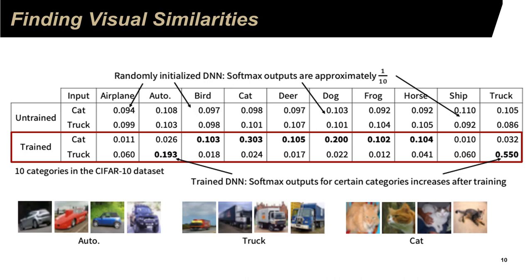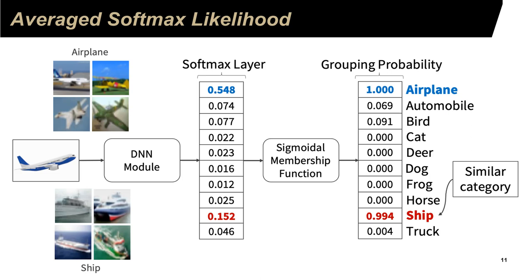If the input is a cat, there is 33% chance of being recognized as a cat, and 20% chance of being recognized as a dog. As you can see, cat is similar to dog. Let's consider an image of a truck as an input. After passing through a trained network, if the input is a truck, it has 55% chance to be recognized as a truck and 19.3% chance to be recognized as an automobile. From here, we can use the softmax to determine the groupings.